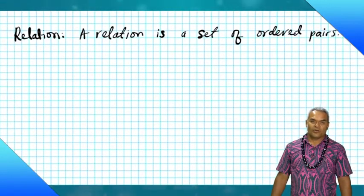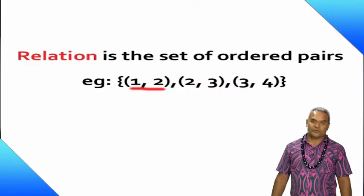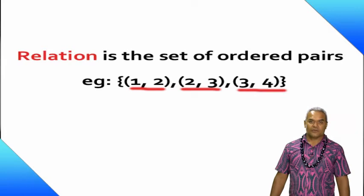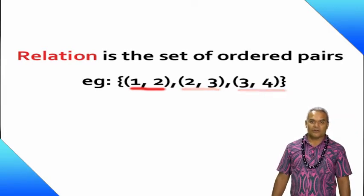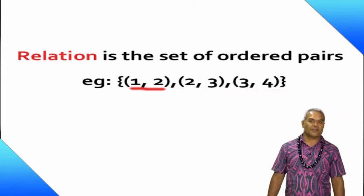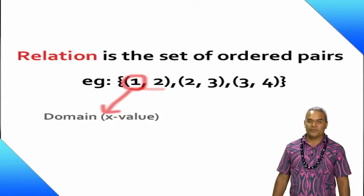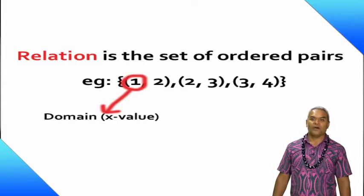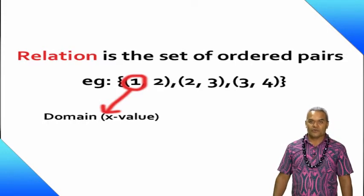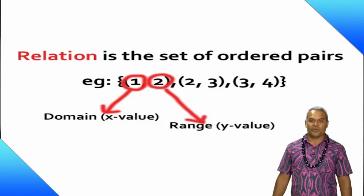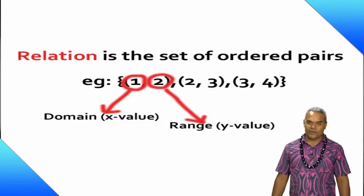Let's have an example. The first ordered pair: one, two. Next one: two, three. Then the last one: three and four. They take one is the first element of an ordered pair. Name: domain or X value. Two is the second element, name: range or Y value.